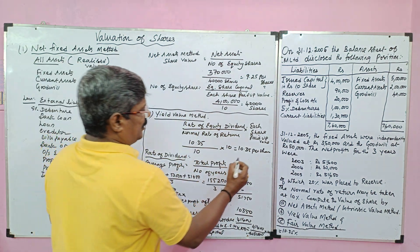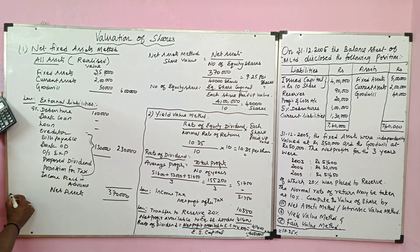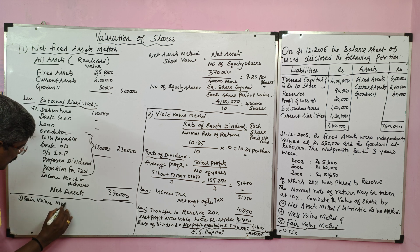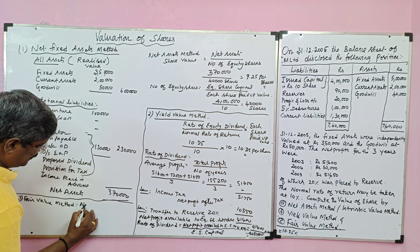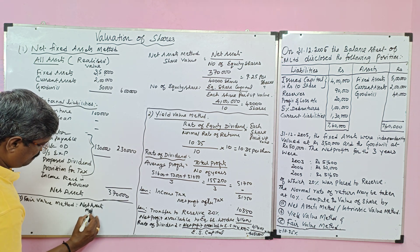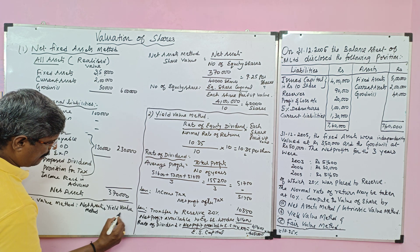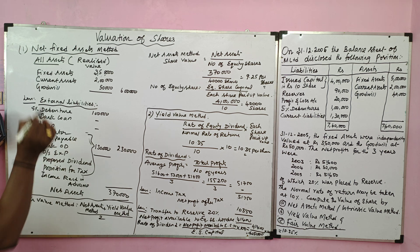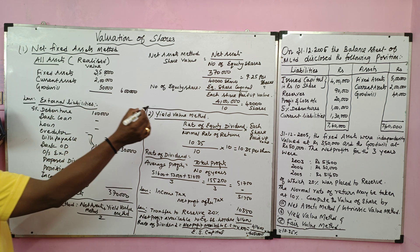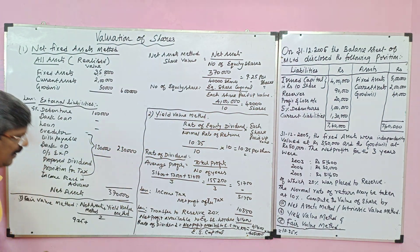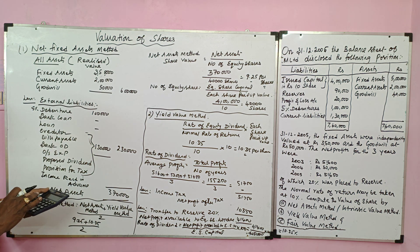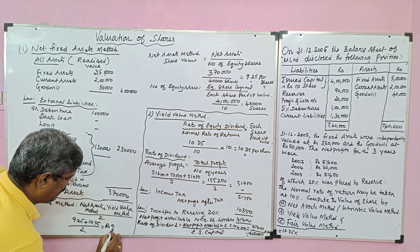Under the yield value method, each share value is rupees 10.35. The third method is the fair value method. Formula: fair value = (net asset method value + yield value method value) divided by 2. Net asset method = 9.25, yield value method = 10.35; so fair value = (9.25 + 10.35) divided by 2 = rupees 9.80 per share.